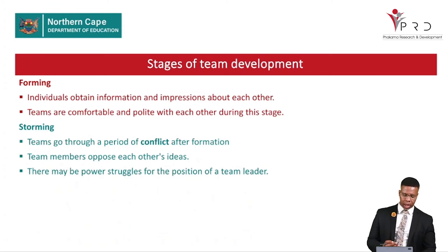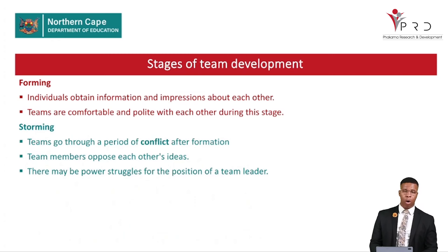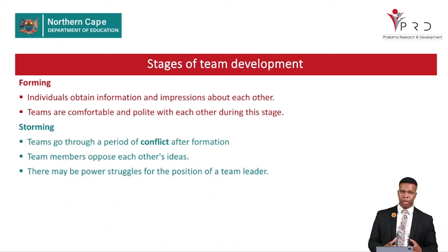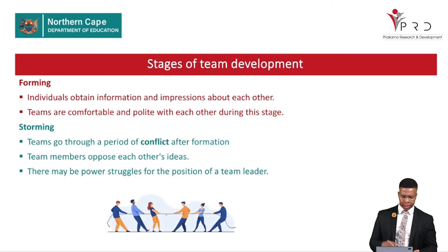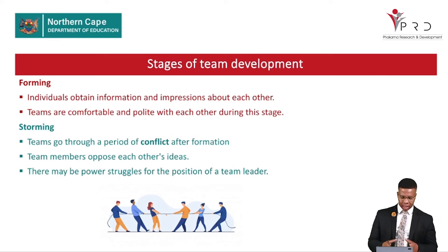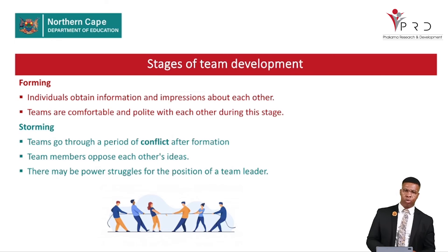The second stage is storming. During storming, teams go through a period of conflict after formation. Team members oppose each other's ideas, and there may be power struggles for the position of team leader. Some members want to be considered team leaders, and others disagree on how the task should be done. This leads to conflict within the team — team members are fighting with each other during the storming stage.